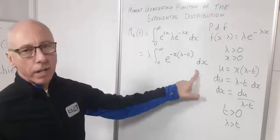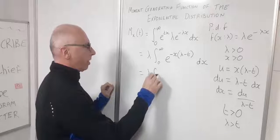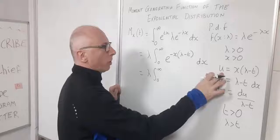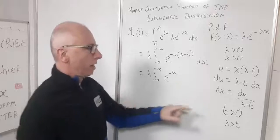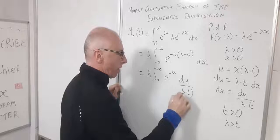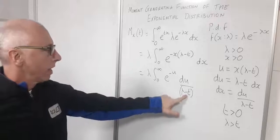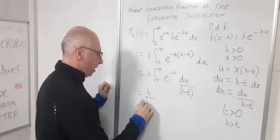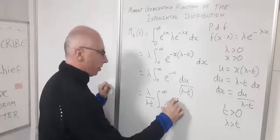Changing everything into the u variable: λ stays out front, the limits remain 0 to infinity, and the integrand becomes e^(−u) times du/(λ − t), since u = x(λ − t).